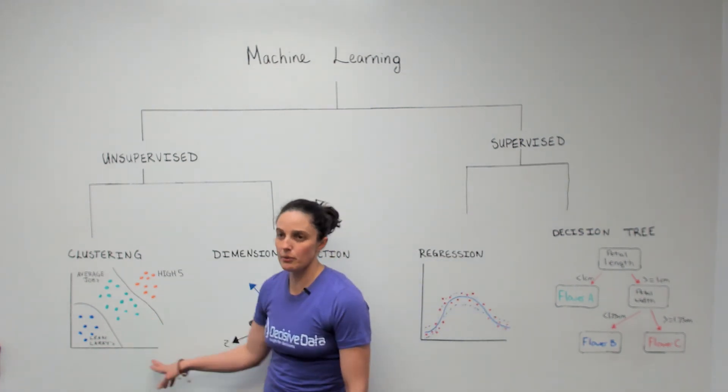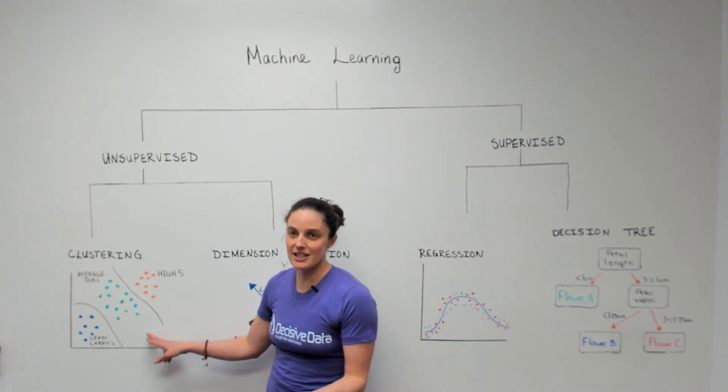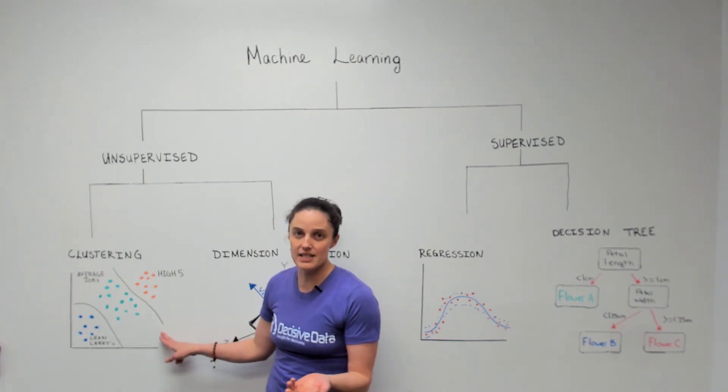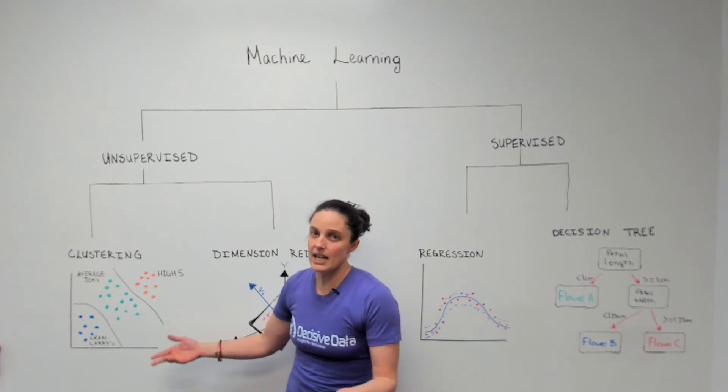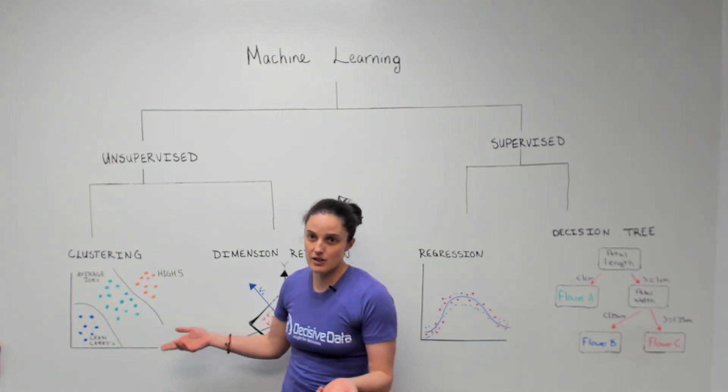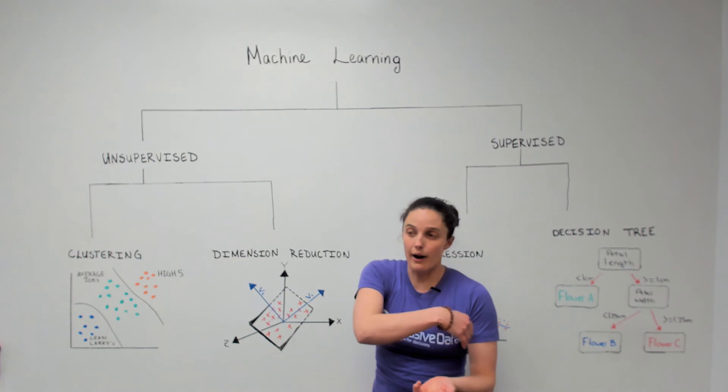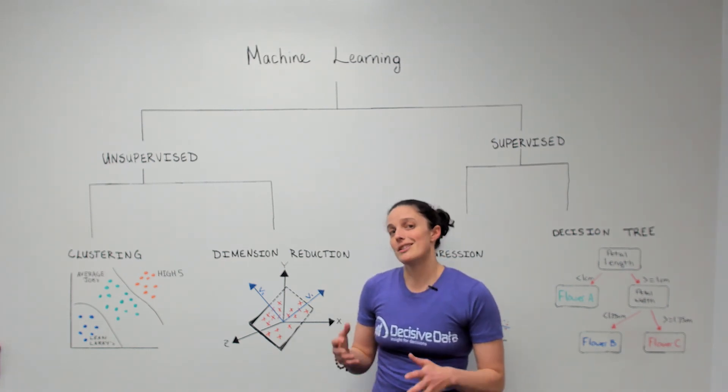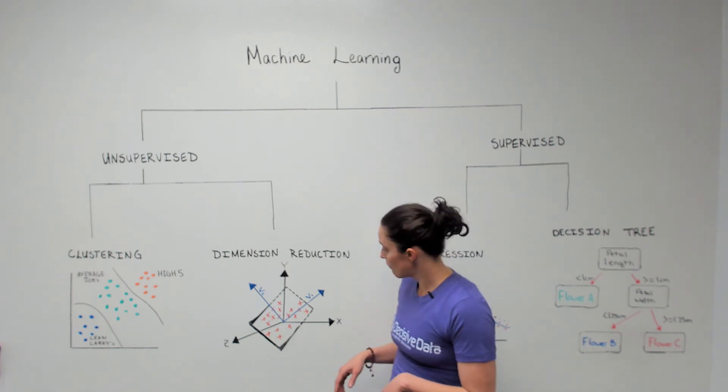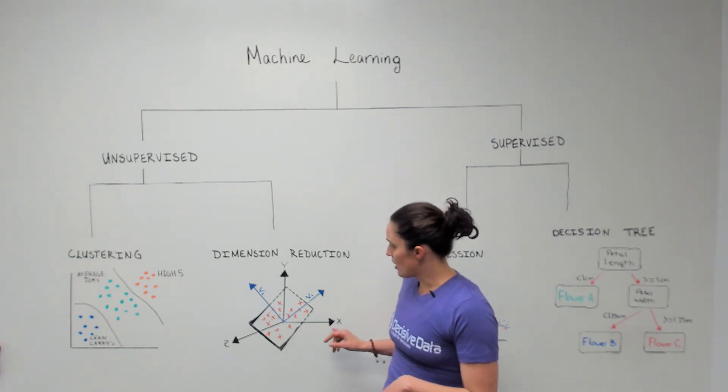So if we have this same problem where we're trying to identify what's the best corollaries to segment customers in terms of buying cereal, we might know that they really don't care about what caking agent the cereal has in it. So maybe we'll just throw that out because we know that it doesn't really matter. However, we might know that dye really does matter.